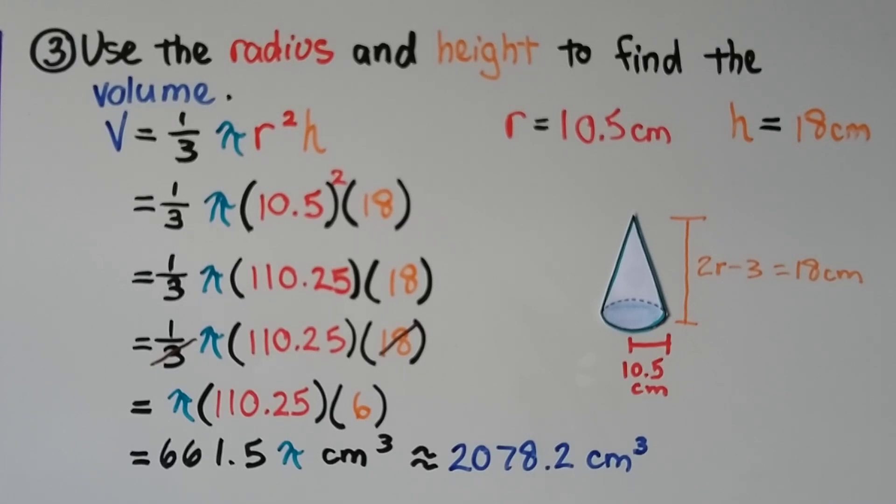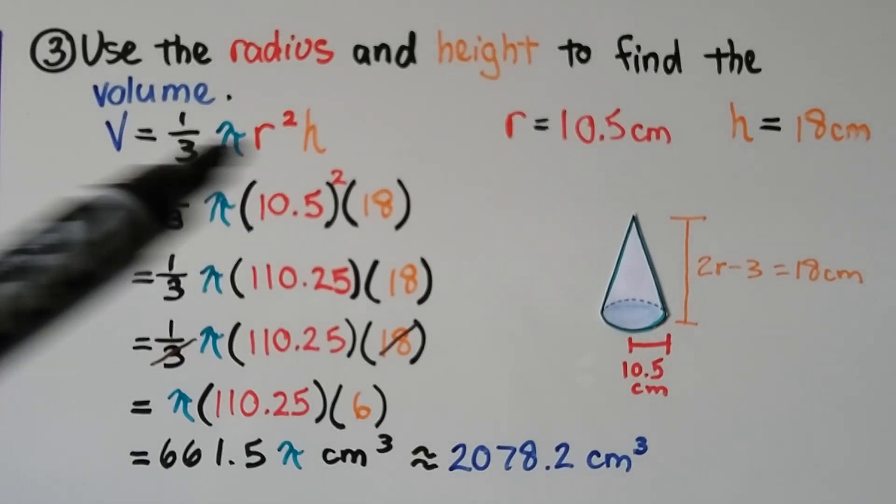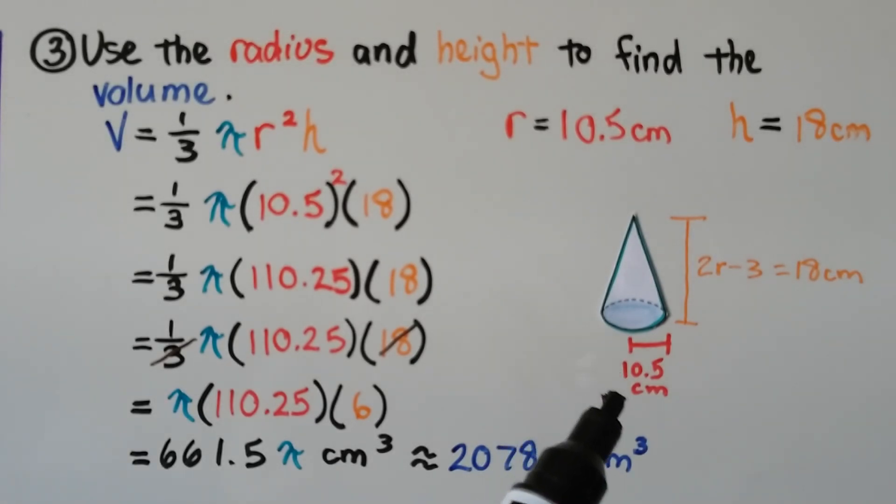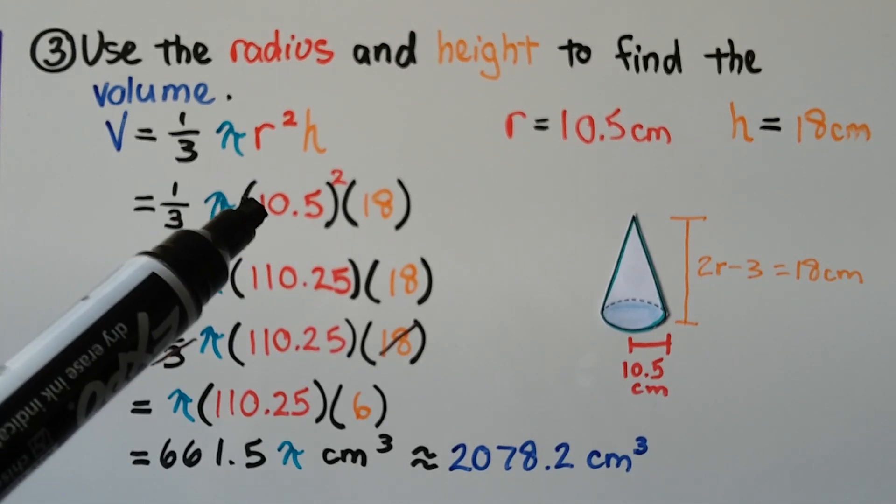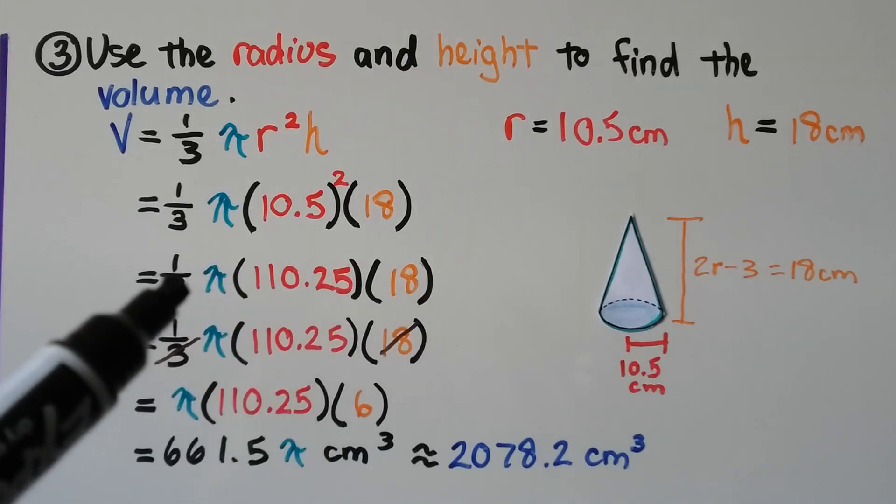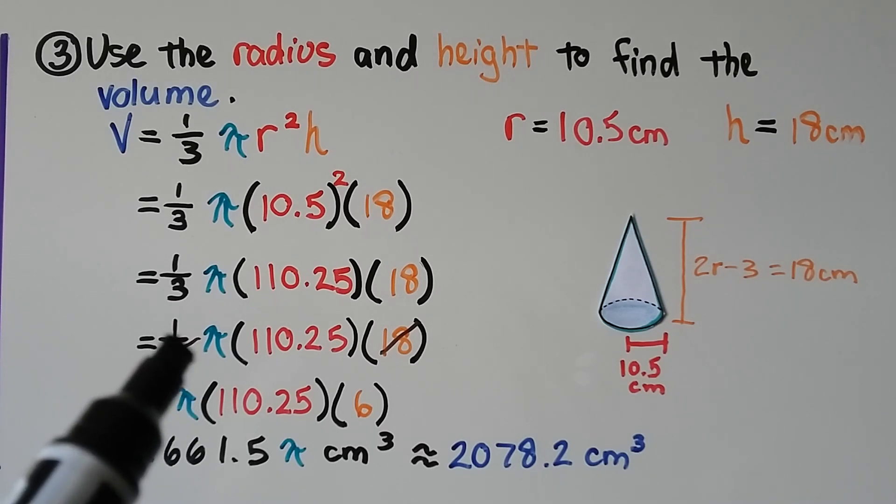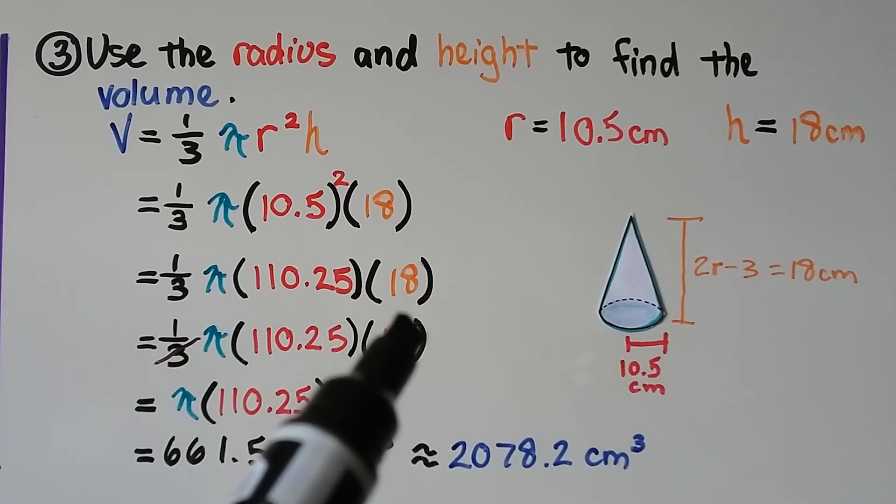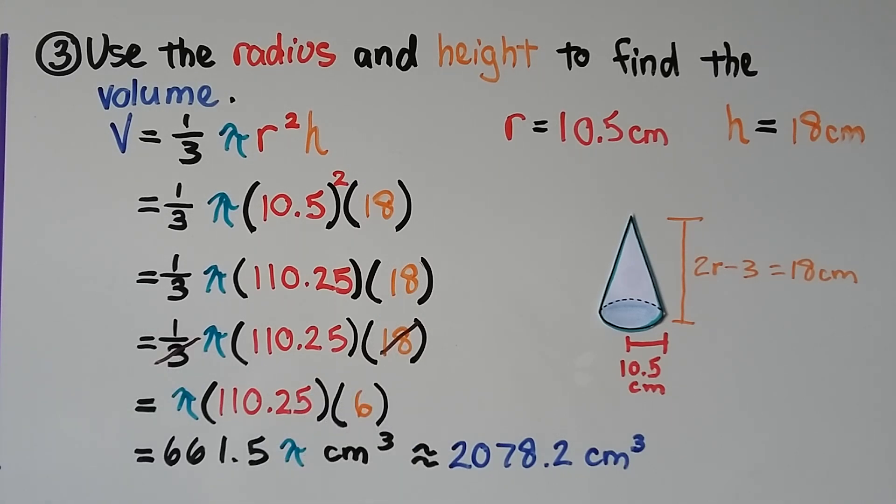And the third thing we do is use the radius and height to find the volume. So we use our volume formula that the volume is equal to 1/3 times pi times the radius squared times height. We know that the radius is 10.5 centimeters, and we know that our height is 18 centimeters. We do the radius squared, 10.5 times 10.5, we get 110.25. We can cancel this 3 out by the 3. There's 6 threes in 18, so that's reduced to a 6, and our fraction's gone. Now we have pi times 110.25 times 6. That gives us 661.5π centimeters cubed, which is approximately 2078.2 centimeters cubed.